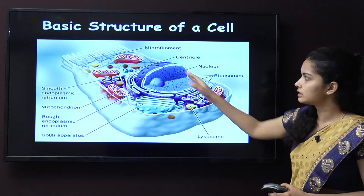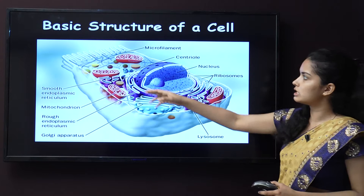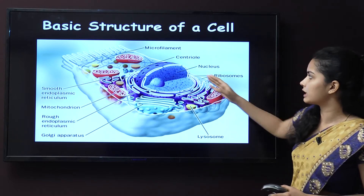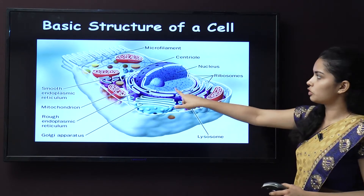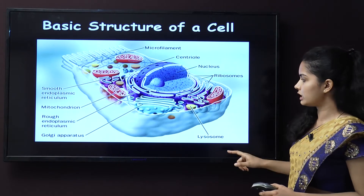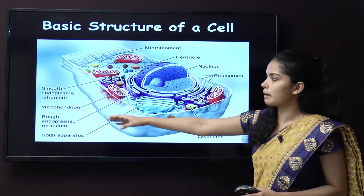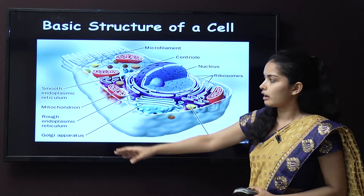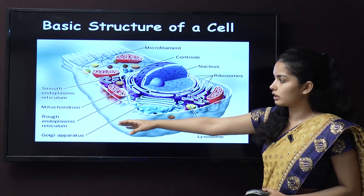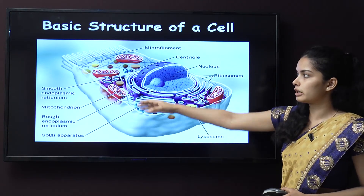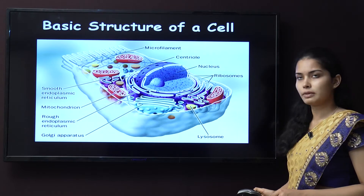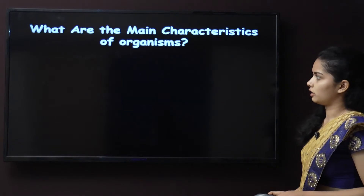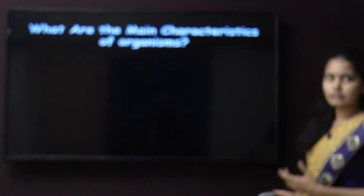This is the basic structure of the cell. As you can see, these are all the organelles: microfilaments, centriole, nucleus, ribosomes, lysosomes, Golgi apparatus, rough endoplasmic reticulum, mitochondria, and smooth endoplasmic reticulum.